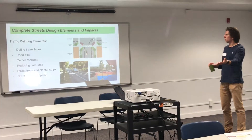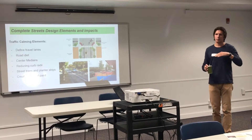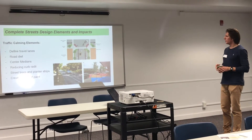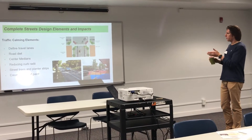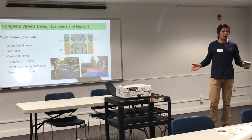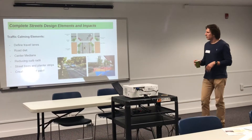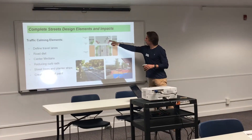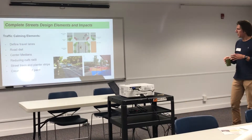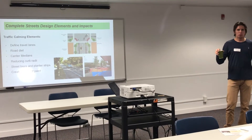The next group of elements are traffic calming elements, focused on slowing traffic down — not below the existing speed limit, but drivers often travel much faster than the posted speed limit. Techniques include defining travel lanes, since in many villages there's no center line and the extra space makes drivers go faster. Road diets are another way of addressing that. Center medians and reducing curve radii — making a steeper turn — prevent cars from whipping around corners as fast. Street trees and planter strips create visual friction along the side of the road; the more objects drivers see, the slower they tend to go.